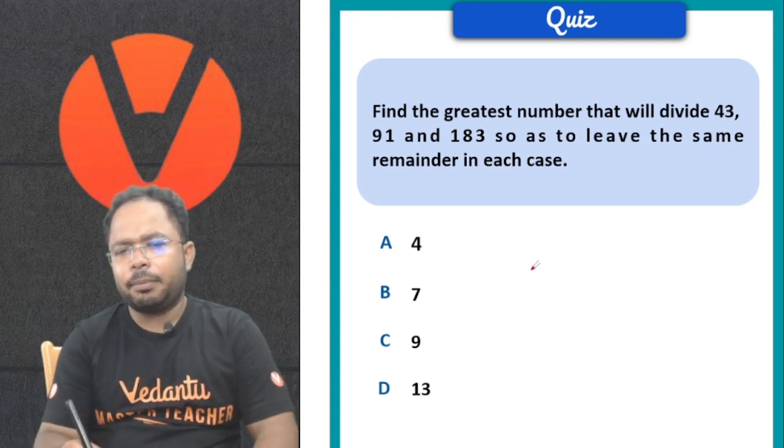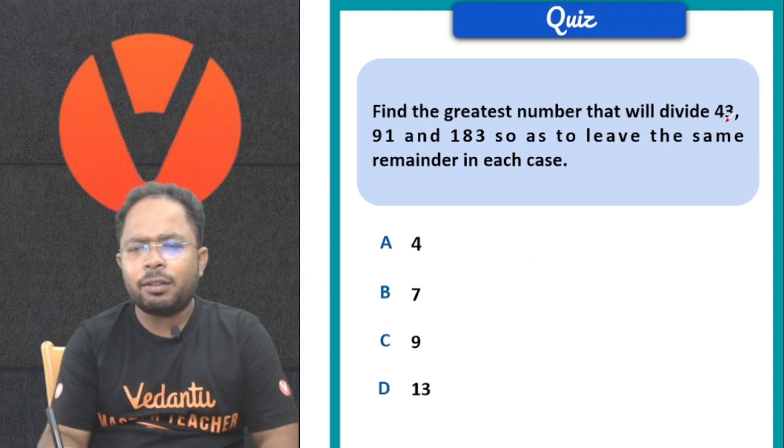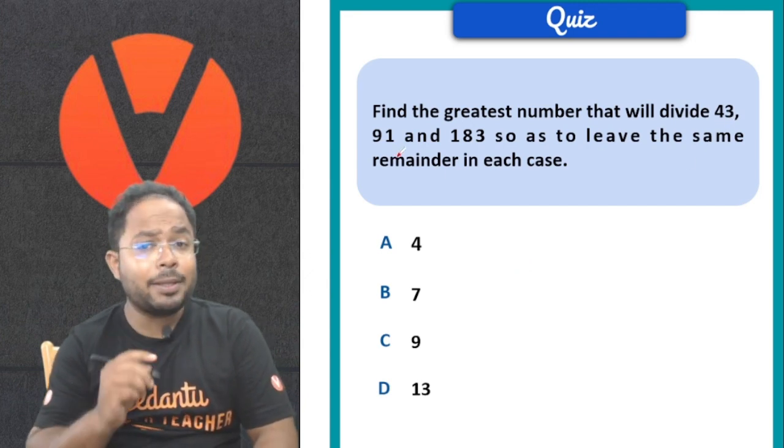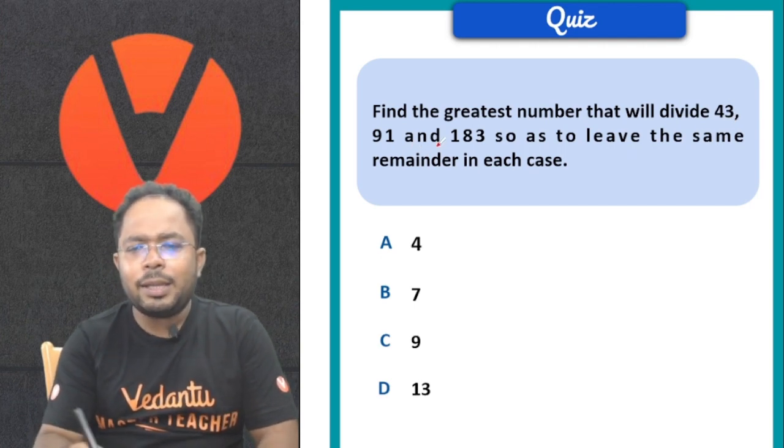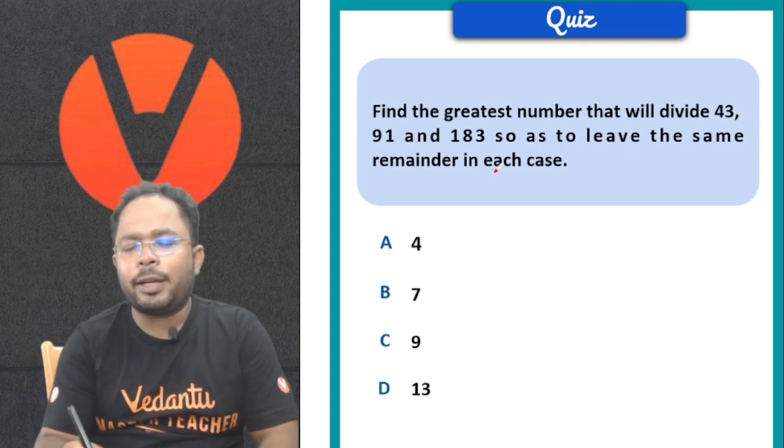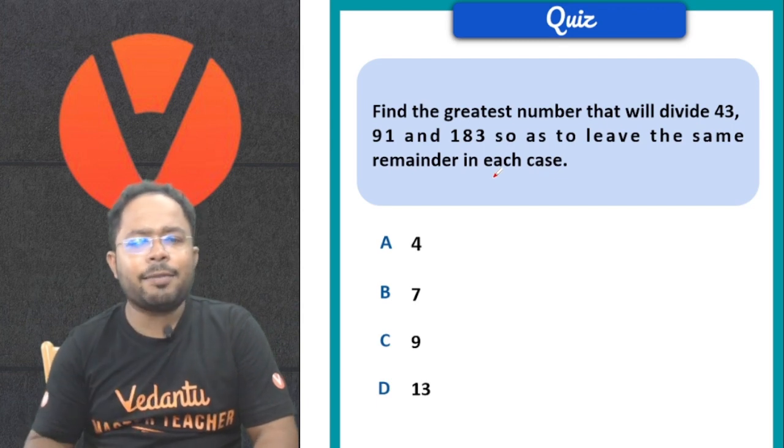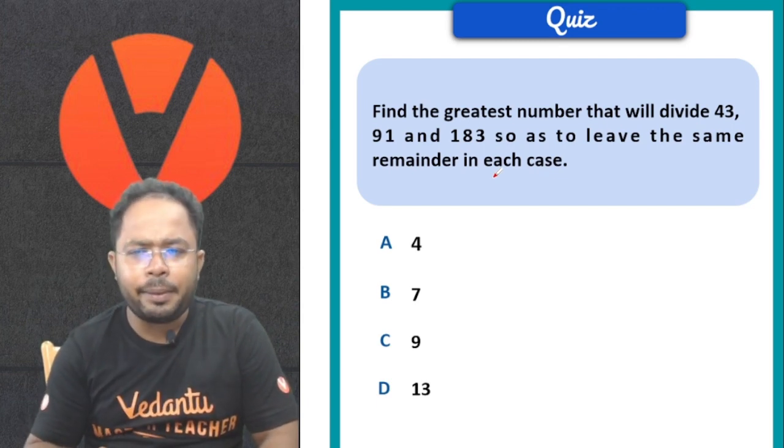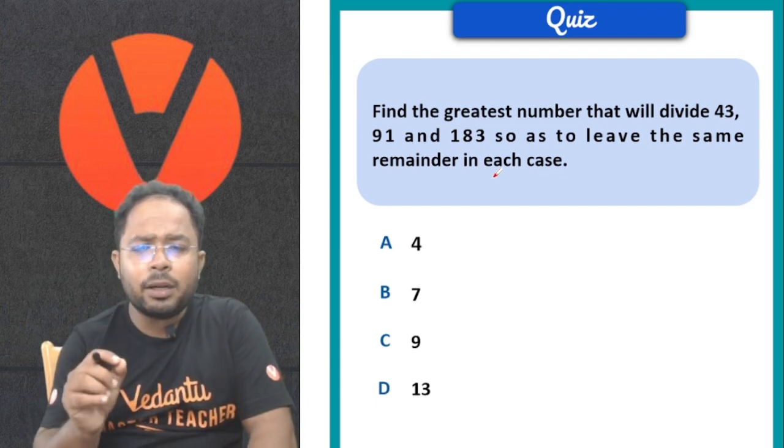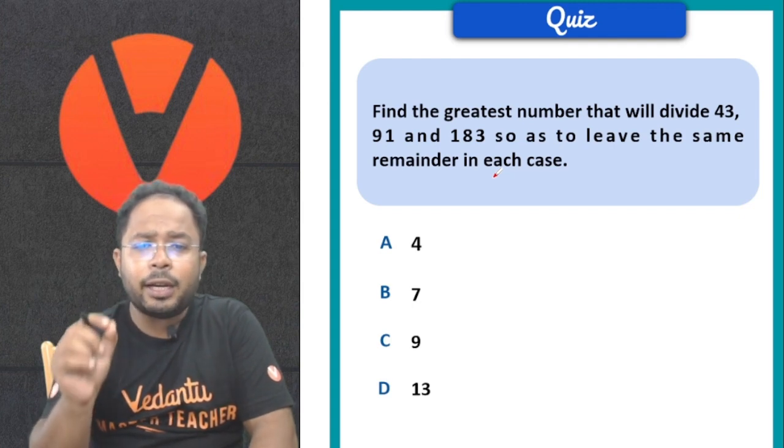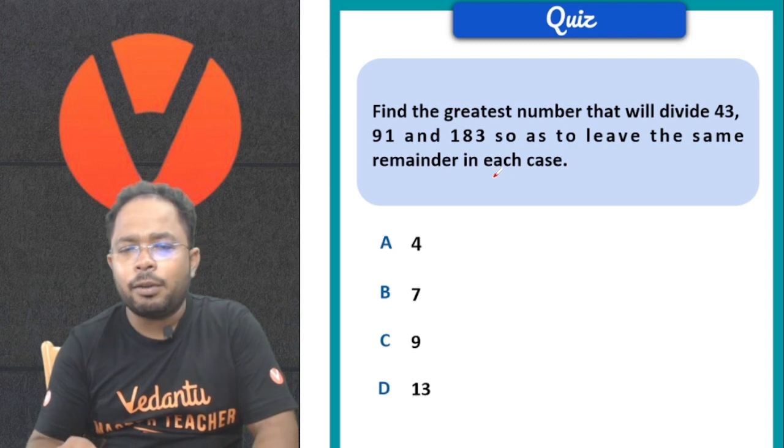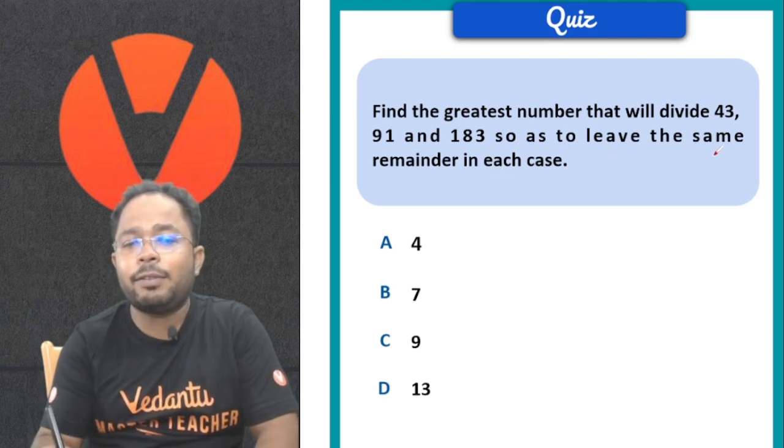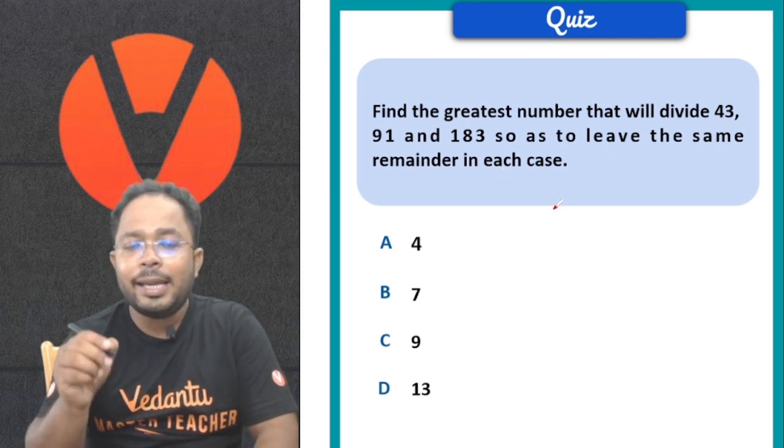I'm hoping you have done it. Let's discuss. Find the greatest number. Many times students make the confusion and find the HCF of 43, 91, 183. If we take HCF of these numbers, we get a number dividing them completely with no remainder. But the question says it should leave the same remainder in each case.